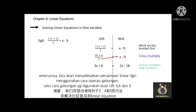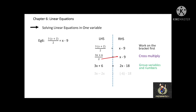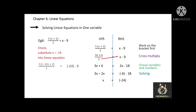Then, the variables are grouped on the left-hand side: 3x minus 2x, and the numbers on the right-hand side: negative 6 minus 18. We solve this equation which results in x equal to negative 24. You can check your answer by substituting x equal to negative 24 into the original equation, and if the left-hand side value equals the right-hand side value, then your answer is correct.